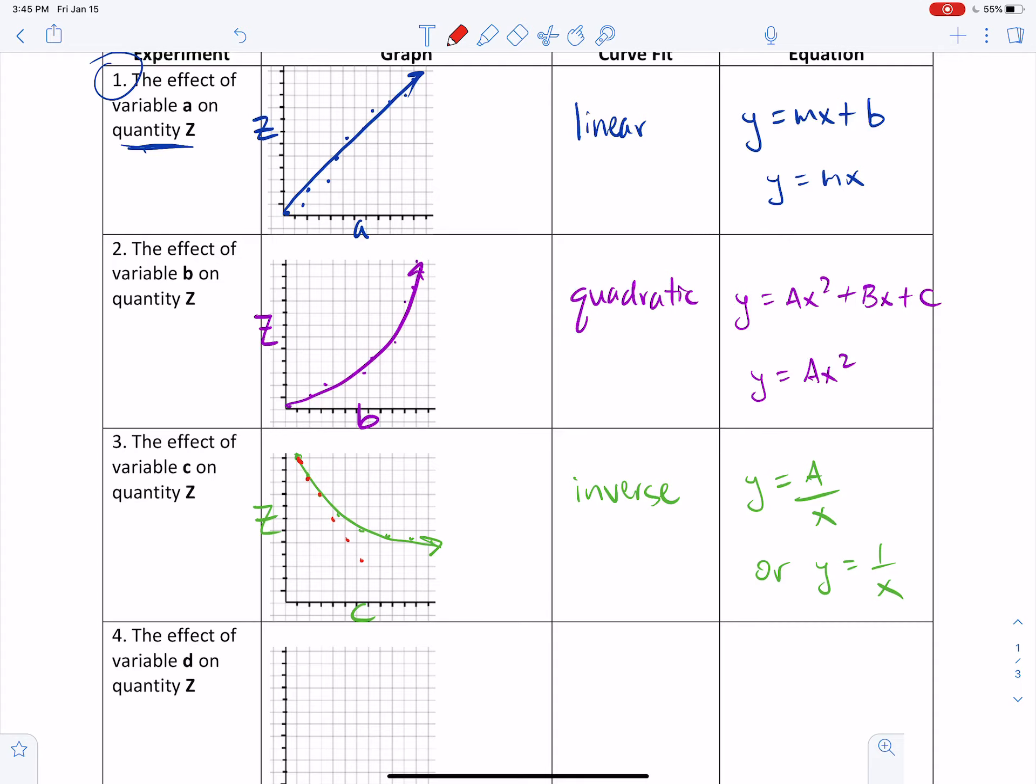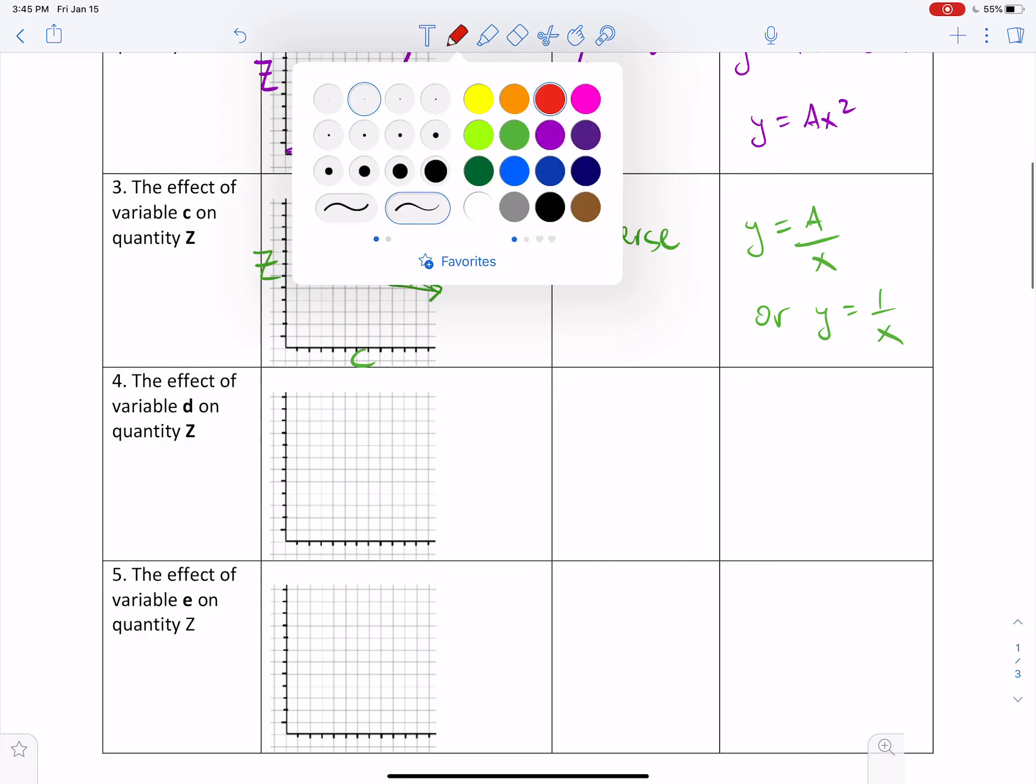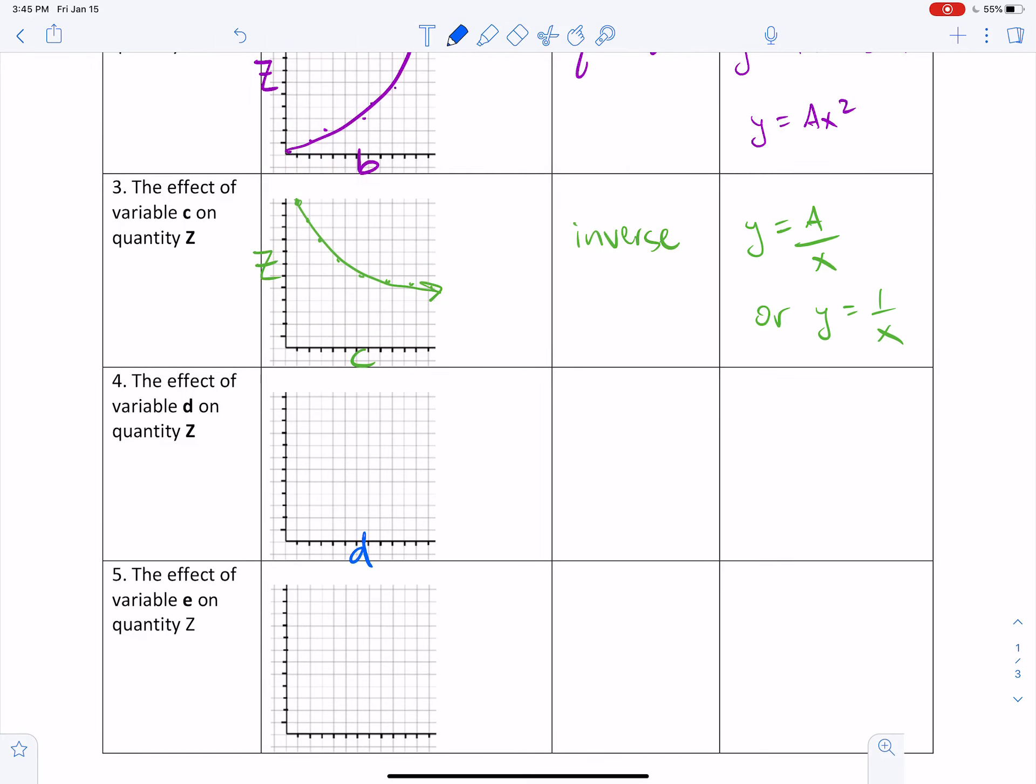Let's keep going. Let's say we change the variable and now we go to variable D. We're measuring its effect on quantity Z. And we notice that as we increase variable D, it does something similar to inverse, but it's much more dramatic. And it's actually dropping. As you increase D, you get these quickly diminishing values for variable Z. This is also an inverse relationship, but it's a particular kind called an inverse square relationship. Where you're getting y equals a over x squared. Or if a is 1, 1 over x squared. So now as you begin to increase quantity or variable D, you very quickly get these small values for quantity Z.